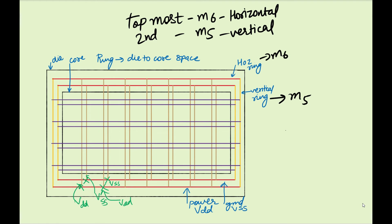It will be alternate VDD and VSS — VDD, VSS, VSS, VDD, VSS — running across the design for the vertical routing resource. Since it is vertical, it could be M5 or M7, both being vertical routing resources. So the brown layer will be either M5 or M7 depending on the project.